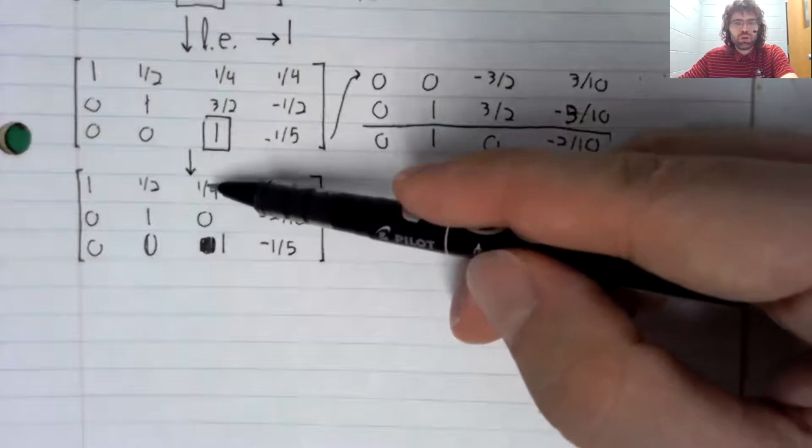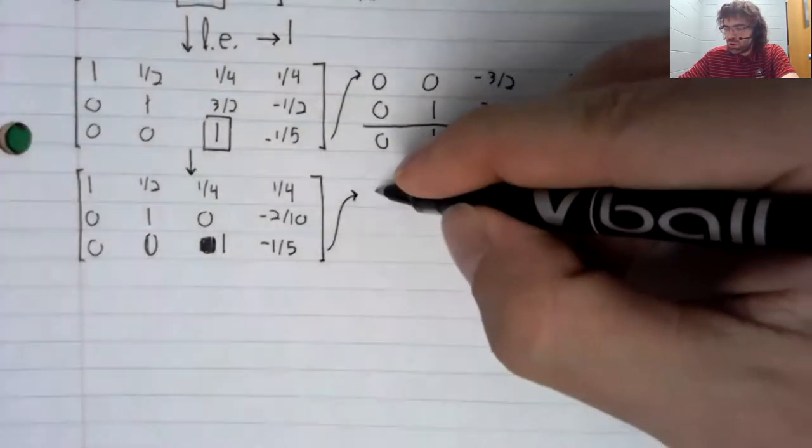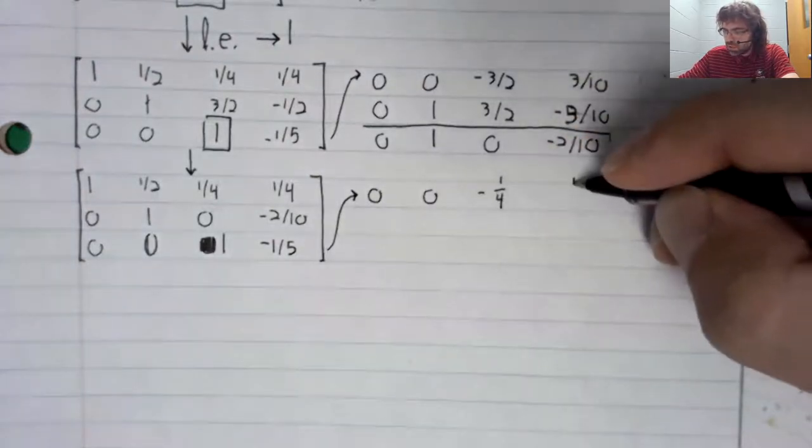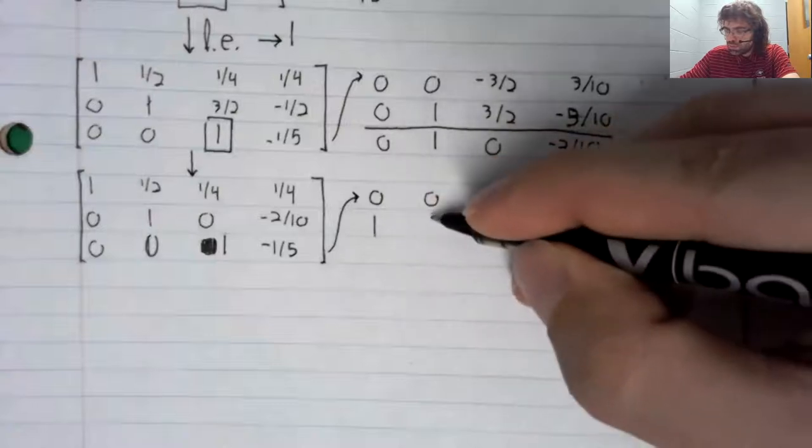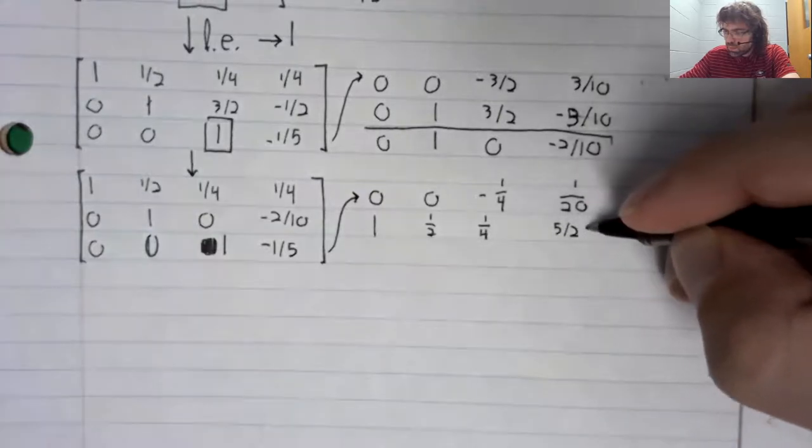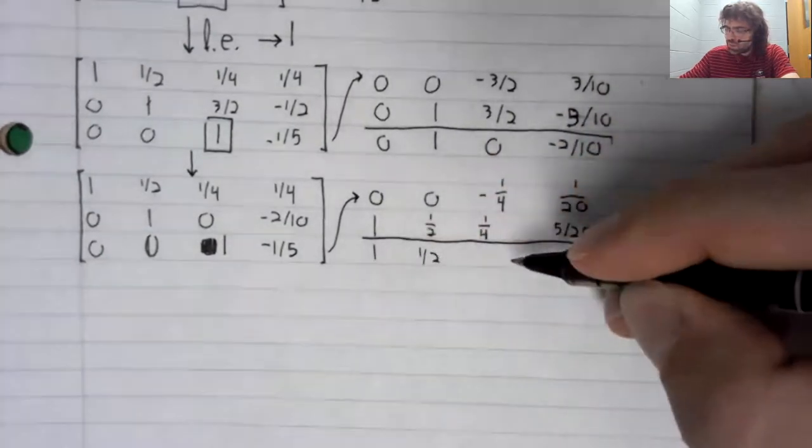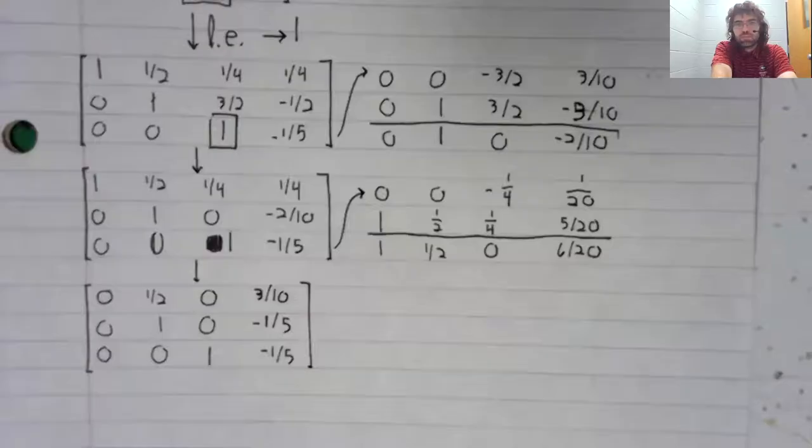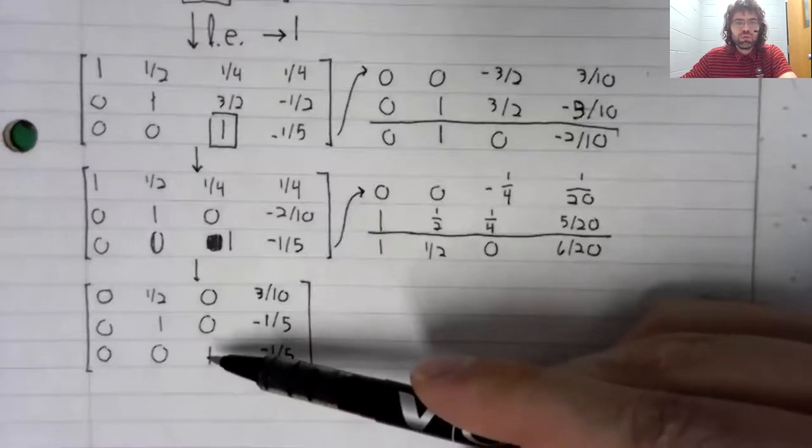Now we'll turn this one-fourth to zero. We'll multiply the third row by negative one-fourth and we'll add it to the first row. And we'll get our new first row. We wanted everything above this leading entry to be zero. And it is.